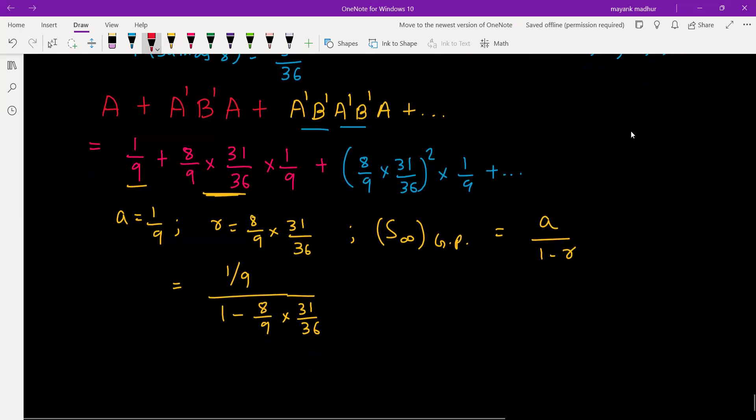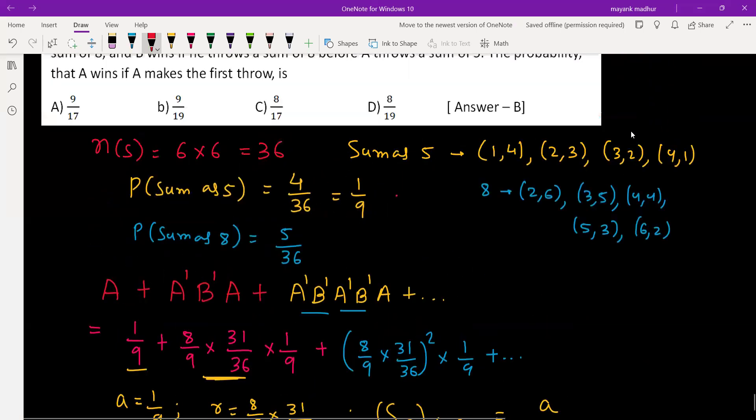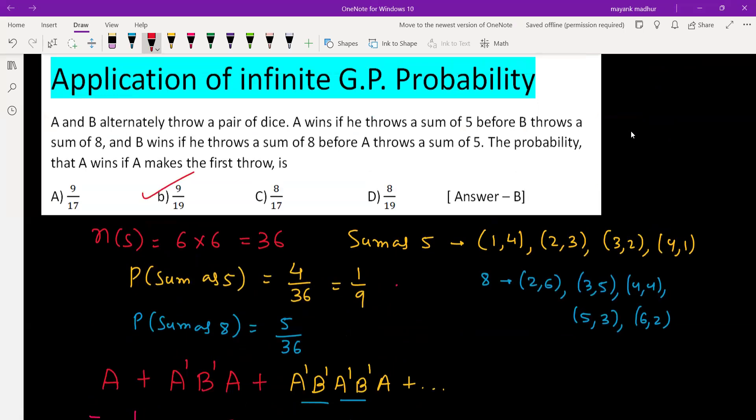We can cancel 4 from here and here and we'll get (1/9) divided by (1 - 62/81), which will be 1/9 divided by 19/81, which turns out to be 9/19. This is in the second option and yes, that is the answer given to us.